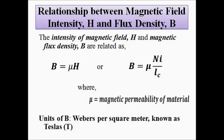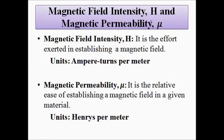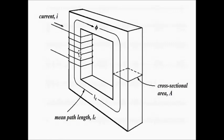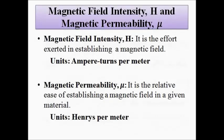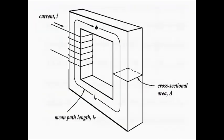The magnetic field intensity H represents the effort — in terms of the amount of current — that has to pass through each turn of wire to generate the required magnetic field. It is the amount of current i that has to be passed through each turn of wire to generate the flux required to drive an electrical machine, be it a motor, generator, or transformer. The unit of magnetic field intensity H is ampere-turns per meter.